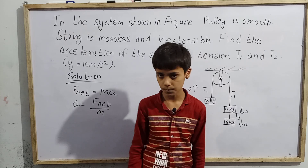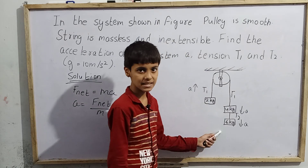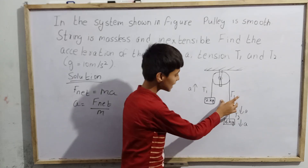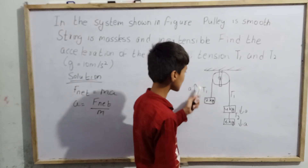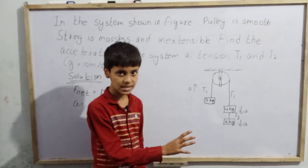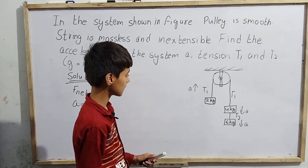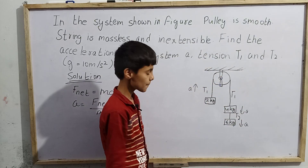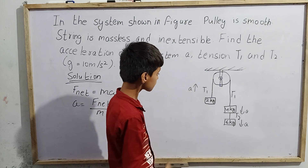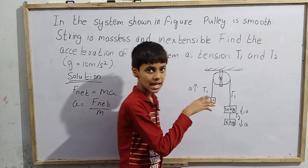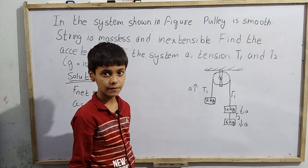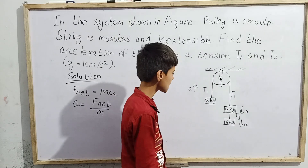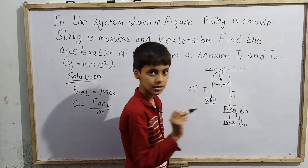Total mass we can easily find out, but how do we find the net force? We need to see where forces are acting. We don't see any external force, so we look at the weights. One block's acceleration is upward and the other blocks' acceleration is downward. The only force acting is weight.